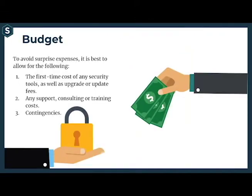The last step we're going to talk about is budget. Having an effective security plan costs money and must be taken into account when drawing up your annual business plans and budgets. Fortunately, there are some free services, tools, and advice available. Additionally, policies and internal documents can sometimes be developed in-house at minimal cost. But some key things like security safeguards will have to be purchased and might involve annual subscriptions. To avoid surprise expenses, it's best to accommodate for the first-time cost of any security tools, upgrade or update fees, any support consulting or training costs, and contingencies.